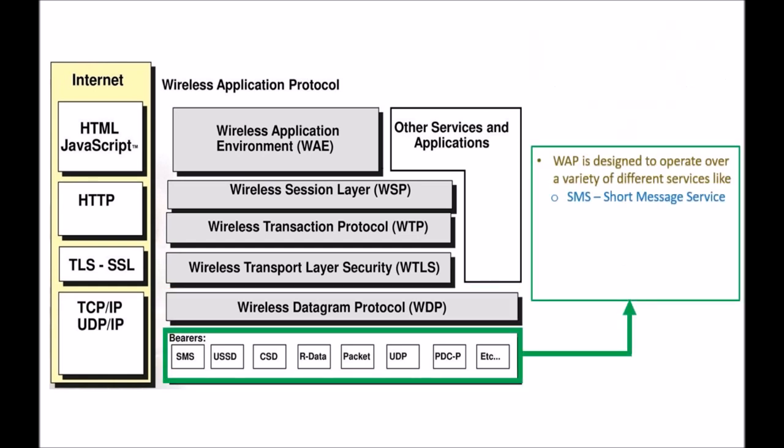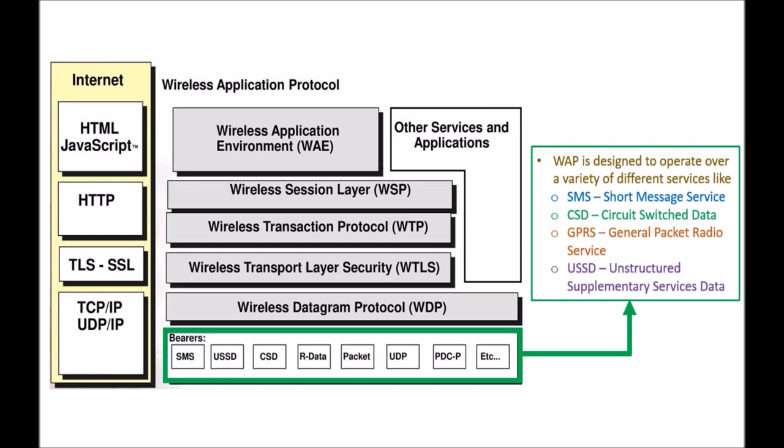Next we are having the bearers. WDP is designed to operate over a variety of different services like SMS, which is Short Message Service; CSD, Circuit Switched Data; GPRS, General Packet Radio Service; and USSD, Unstructured Supplementary Services Data.